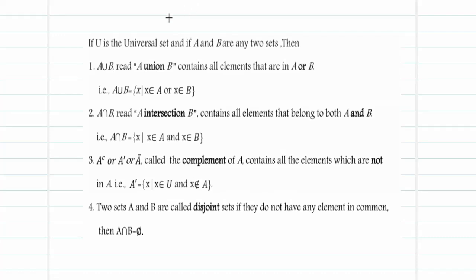Let U be the universal set, and let A and B be any two sets. We read A∪B as 'A union B'. The union symbol is the U-shaped sign. A union B contains all elements that are in A or in B — similar to the OR operator in logic gates. By set-builder notation: A∪B = { x | x ∈ A or x ∈ B }.